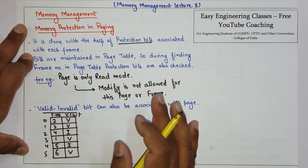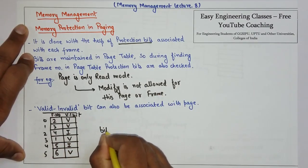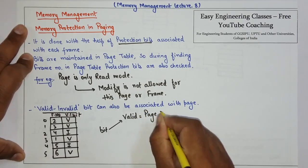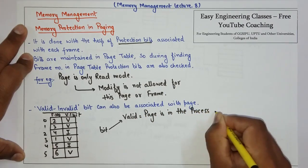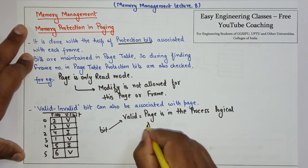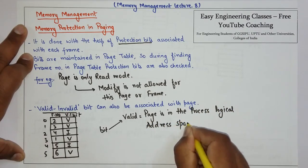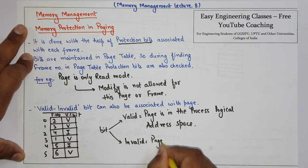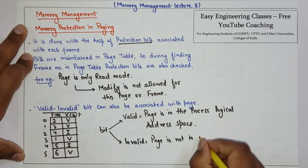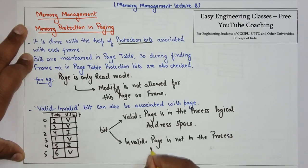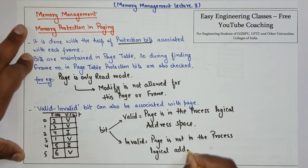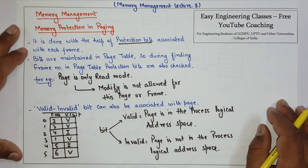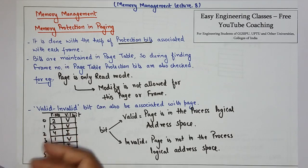Now, what is the meaning of valid and invalid? If the bit is set as valid, it means that the page is in the process's logical address space. And if the bit is set as invalid, it means the page is not in the process's logical address space. That is how protection is maintained in paging — with the help of either protection bits or the valid-invalid bit.